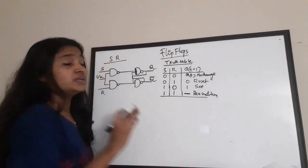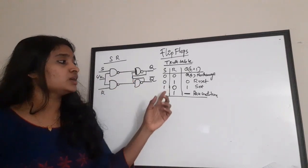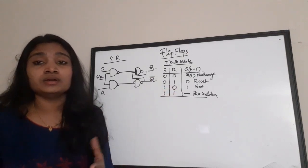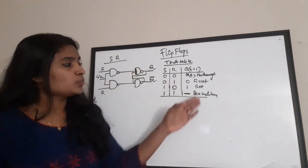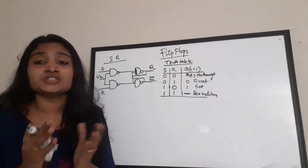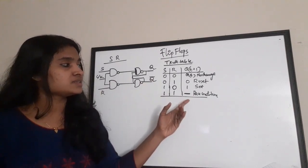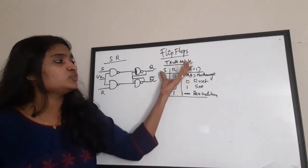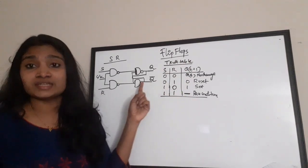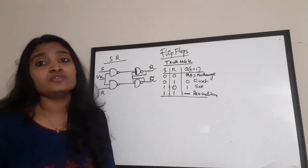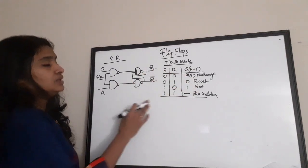This race condition happens because of the delay of transistors. In flip-flops we are also using transistors, so if we make both S and R equal to 1, the transistor will take some time to settle. The output cannot be predicted as 0 or 1, so there is a race between the 0 state and 1 state — that is called the race condition or unstable state. If you study this truth table, you can then derive the excitation table of SR and the truth table and excitation table of JK.